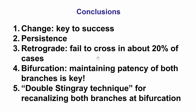This case illustrates several important points. The first is that changing strategy during CTO-PCI is very important to be successful — sometimes the initially selected strategies don't work and doing something different, as well as persisting and trying different techniques, is the key to success. In about 20% of retrograde cases we are unable to cross the collaterals, as happened here. When you have a bifurcation at both the proximal and distal cap, it is important to keep patency of both branches, achievable by antegrade wire escalation, the retrograde approach, or — if subintimal reentry is required — by performing reentry in both branches of the bifurcation.